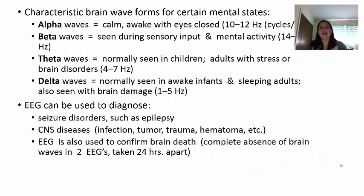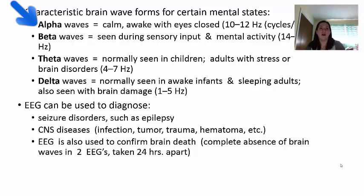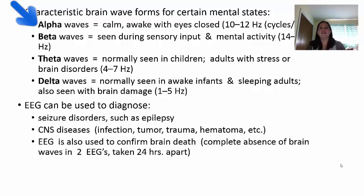Alpha waves are shown in red in your book. These occur when an adult is calm and awake yet has their eyes closed. The brain is still working — you're awake, can hear certain stimuli, might smell something or feel touch — but we've taken vision out. This is what alpha waves should look like in a normal adult.